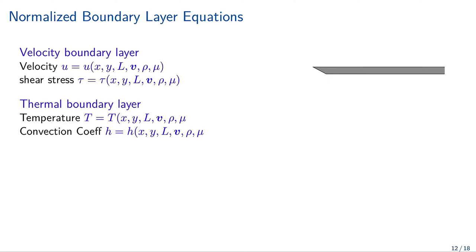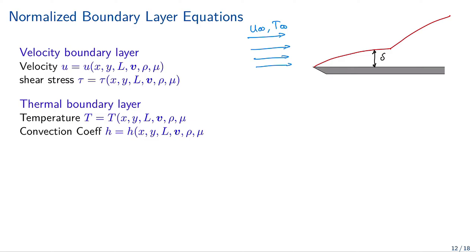We have flow coming into a plate with velocity u-infinity. When it hits the plate it forms a boundary layer. The fluid has a temperature T-infinity, the boundary layer thickness is delta, the plate is at temperature Ts, X is measured from the tip of the plate, and the total plate distance is L.